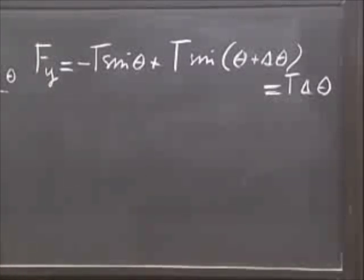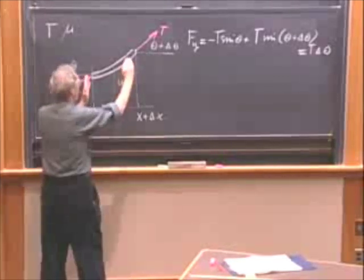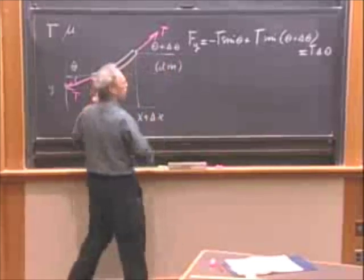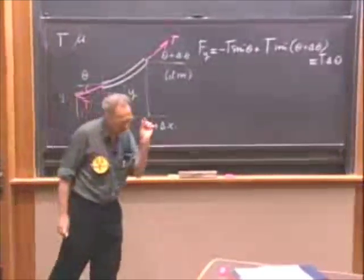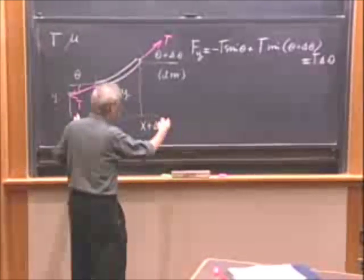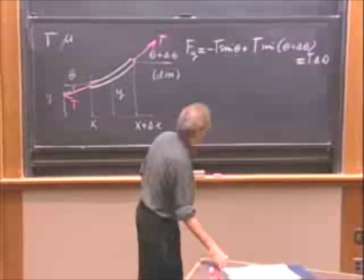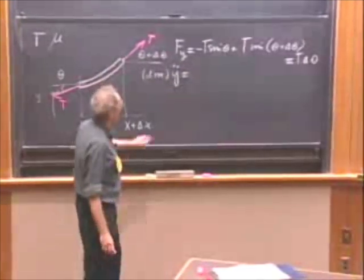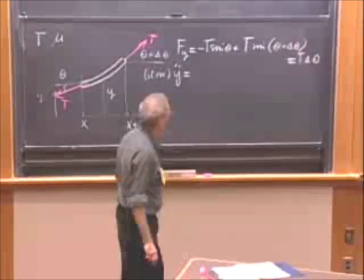Now I will apply Newton's second law. The amount of mass that is in here, and I will calculate shortly what dm is, it's a little bit of mass. We're going to make dx go to zero, infinitesimally small amount of mass. And so that mass times y double dot must now be this force that we just calculated. It must be T delta theta.